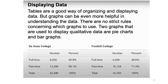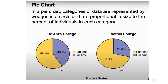In De Anza College the full-time members are 9,200, and in Foothill College the full-time students are 4,059. In a pie chart, categories of data are represented by wedges in a circle and are proportional in size to the percentage of individuals in each category.